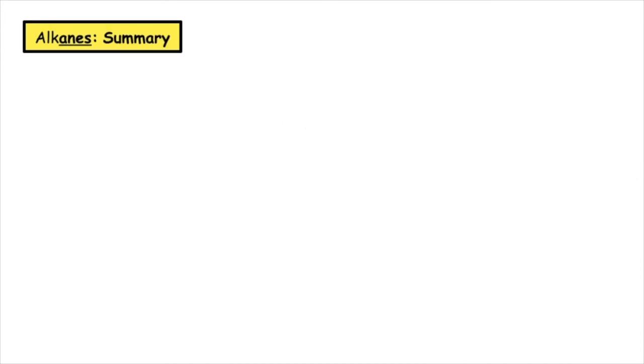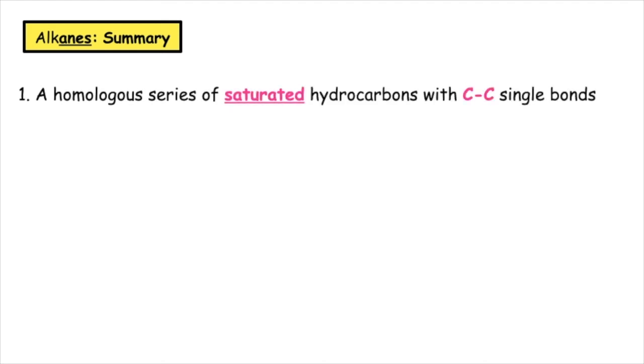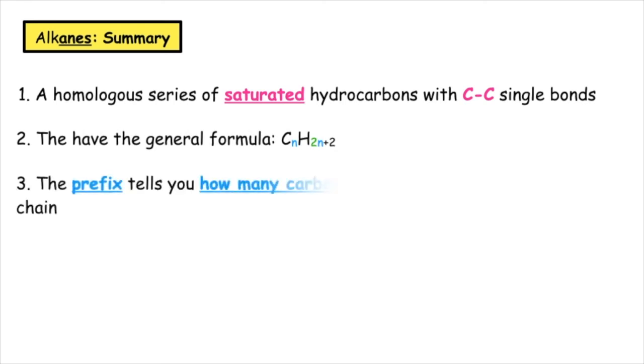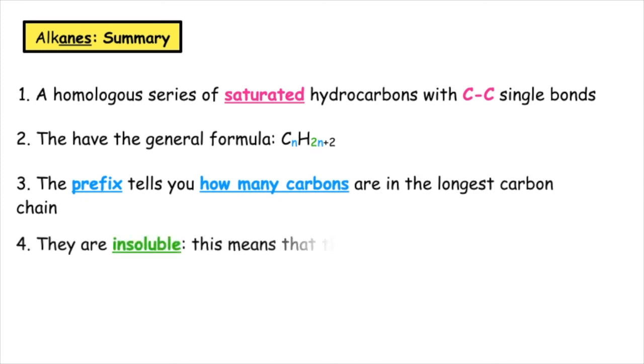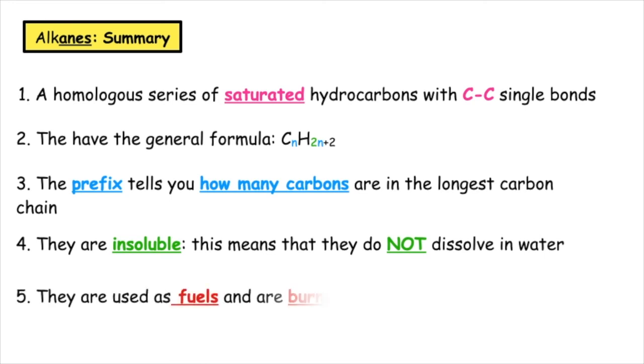To summarize everything that we need to know from the National 5 SQA course spec for alkanes is that it is a homologous series of saturated hydrocarbons with carbon to carbon single bonds. They have the general formula CnH2n plus 2. The prefix tells you how many carbons are in the longest carbon chain. They are insoluble, which means that they do not dissolve in water. They are also used as fuels and are burned to release energy.